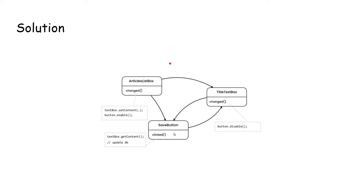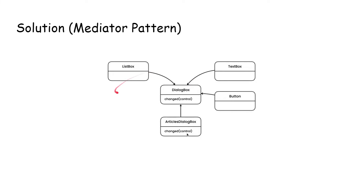The solution is to use a mediator to organize this. I have a list box, a text box, and a button, and they all communicate to the dialog box instead of each other. The list box doesn't communicate directly to the button or the text box — they simply communicate to the mediator, the dialog box. If there's a change in the list box, it communicates to the dialog box, which then mediates — enabling or disabling the button and text box as needed.